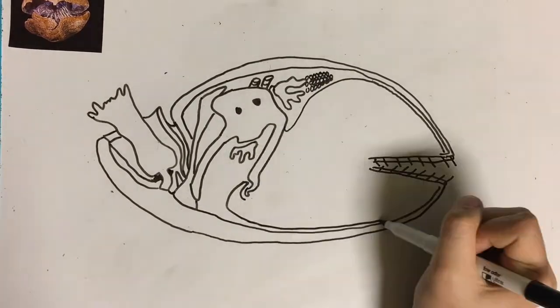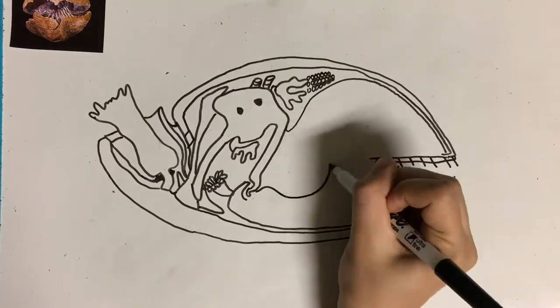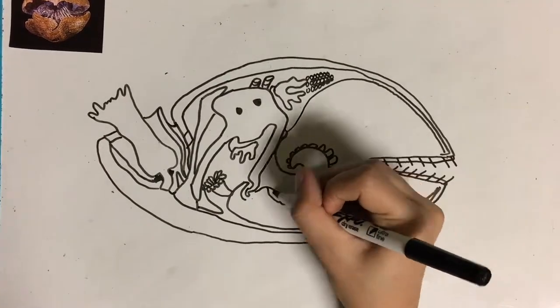Their digestion takes place extracellularly, and the most common species of brachiopods have two digestive openings, one for intake and one for waste.